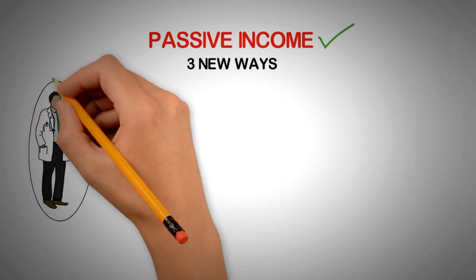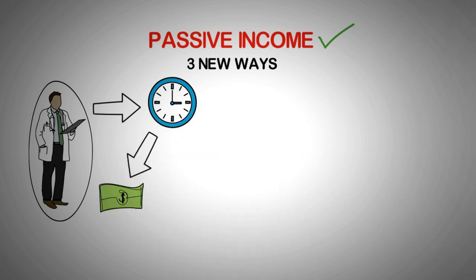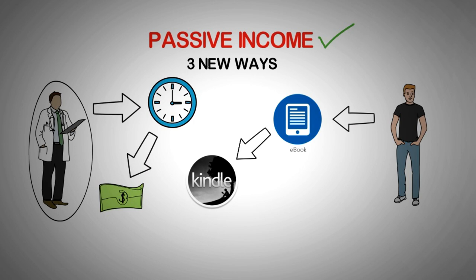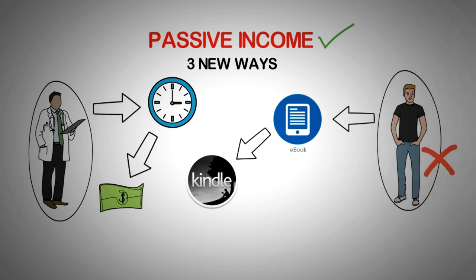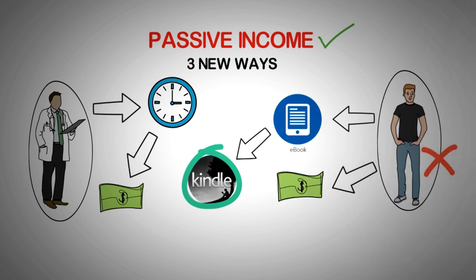To deliver your value — that is, to perform surgery — you have to be present and give your time to get paid. Your time is attached to your income. Now imagine you wrote an e-book, a digital product, and listed it on Amazon Kindle. To sell your e-book, you don't have to be present. Once listed, people buy it directly from Kindle and you get paid every time it sells — your time is detached from your income.